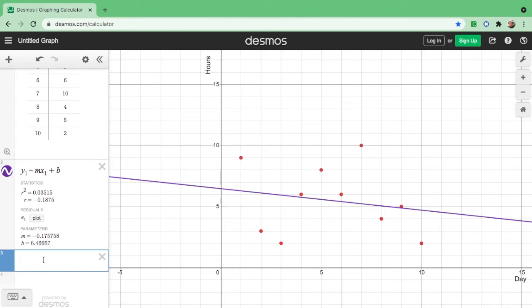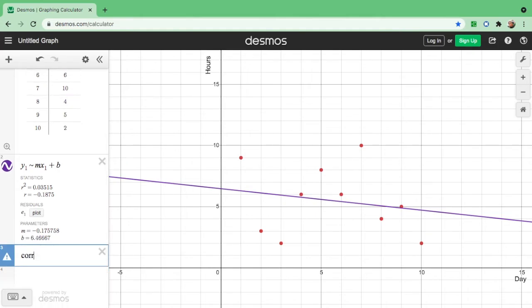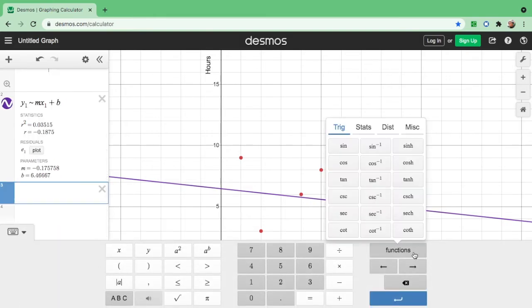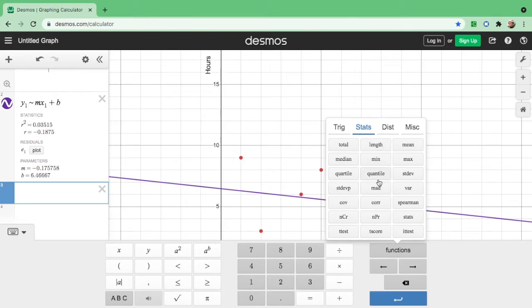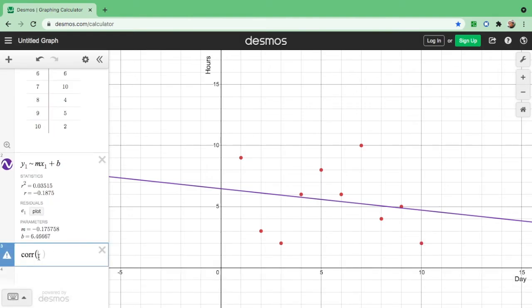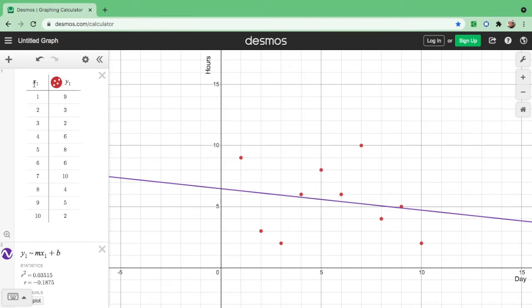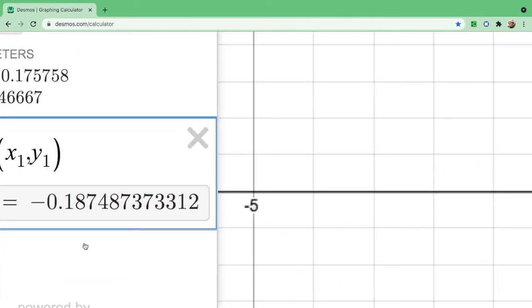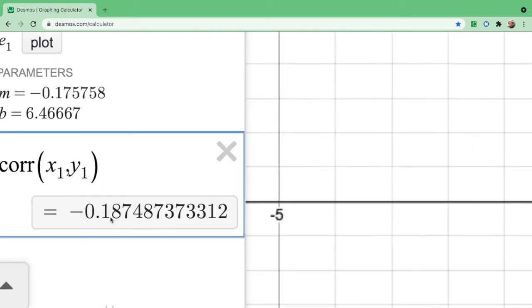There are two ways. One is type C-O-R-R, stands for correlation. Or if you don't want to type it, go to function, click stats, and find C-O-R-R. So it's actually the same. So just type C-O-R-R for correlation. And we are finding for the correlation of x1 and y1. So we will type x1, comma, y1, and there you go. So the value of R or the correlation coefficient is negative 0.19 rounded off until two decimal places.